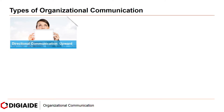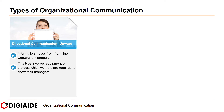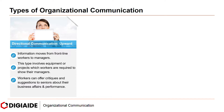And finally, directional communication. In this case, we have three types: upward, horizontal, and downward. In upward directional communication, information moves from the frontline workers to managers. This type involves equipment or projects which workers are required to show their managers. Workers can also offer critiques and suggestions to seniors about their business affairs and performance.